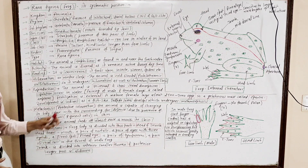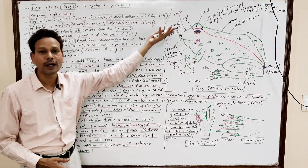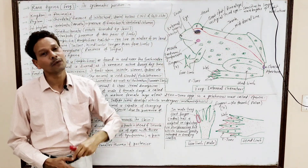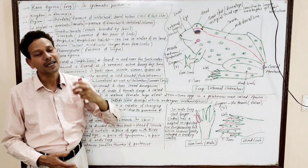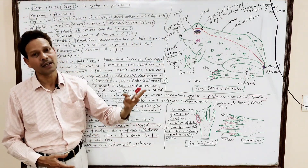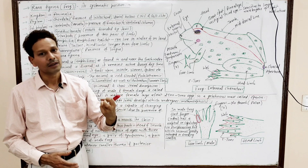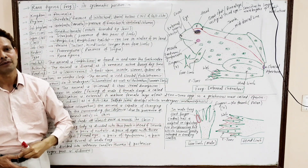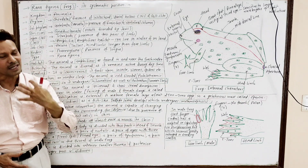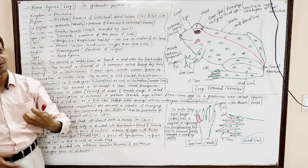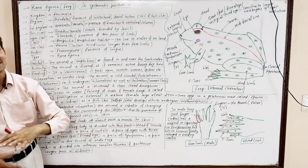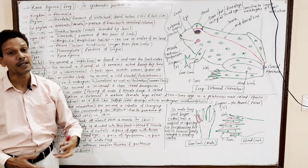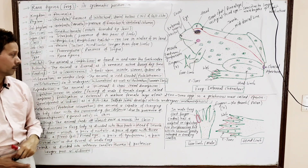Feeding: As we know, the frog is carnivorous. Its sticky tongue helps in the capturing of insects, worms, and spiders.